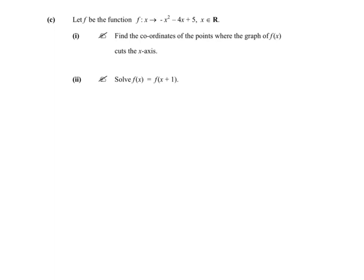Now we're going to have a look at the functions question. This is from Paper 1 from the year 2010, and it's question 5c. So let's have a quick read through the question. Let f be the function f(x) goes to minus x squared minus 4x plus 5, where x is an element of R. The first question is: find the coordinates of the points where the graph of f(x) cuts the x-axis.